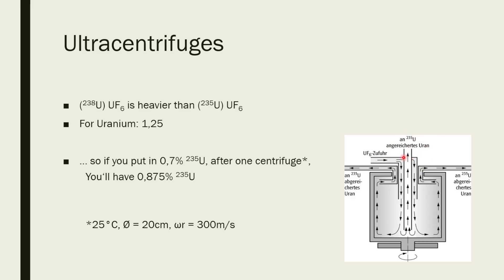But only assuming that the gas is at a temperature of 25 degrees C, the centrifuge has a diameter of 20 centimeters and it spins at around 300 meters per second. A brief introduction on how to enrich for uranium. With that being said, thank you for attention and goodbye.